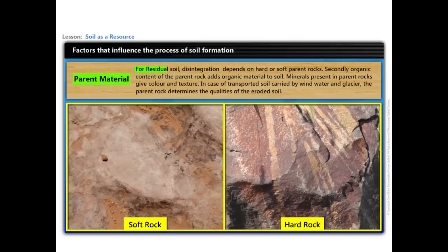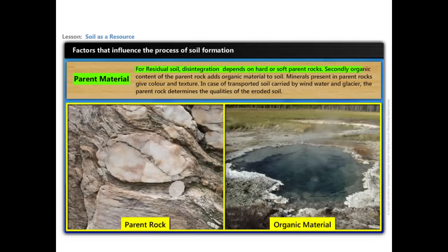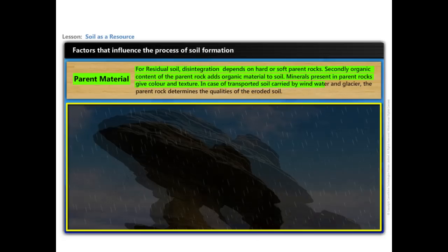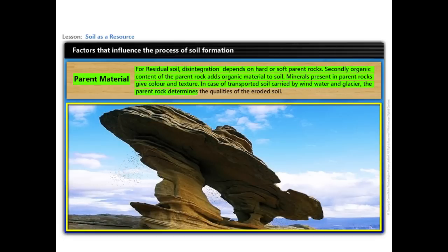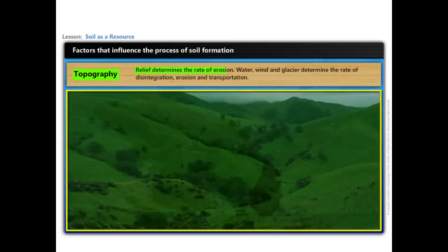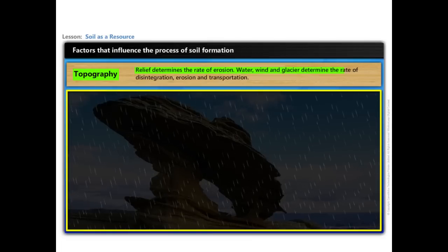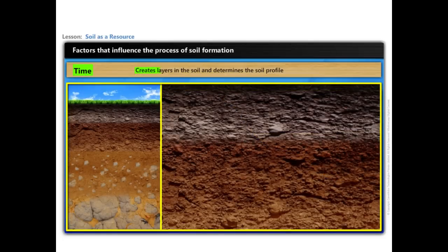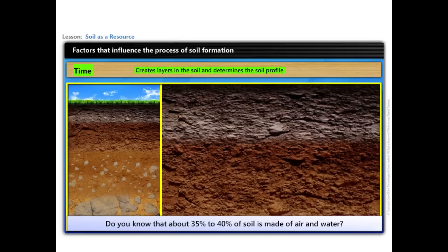Parent material: for residual soil, disintegration depends on hard or soft parent rocks. The organic content of the parent rock adds organic material to soil, and minerals present in parent rocks give color and texture. In the case of transported soil carried by wind, water and glacier, the parent rock determines the qualities of the eroded soil. Topography: relief determines the rate of erosion; water, wind and glacier determine the rate of disintegration, erosion and transportation. Time creates layers in the soil and determines the soil profile.